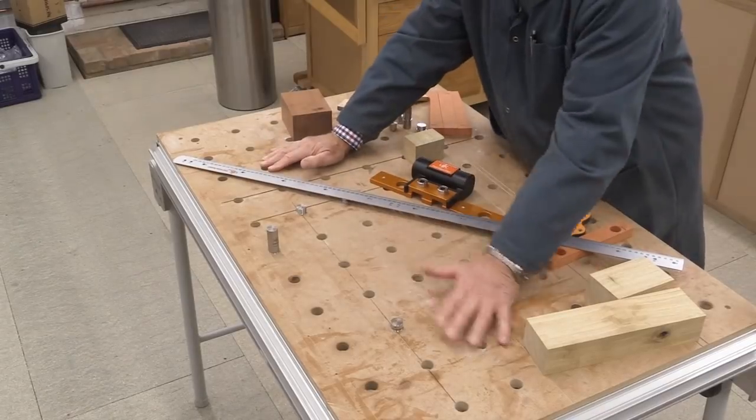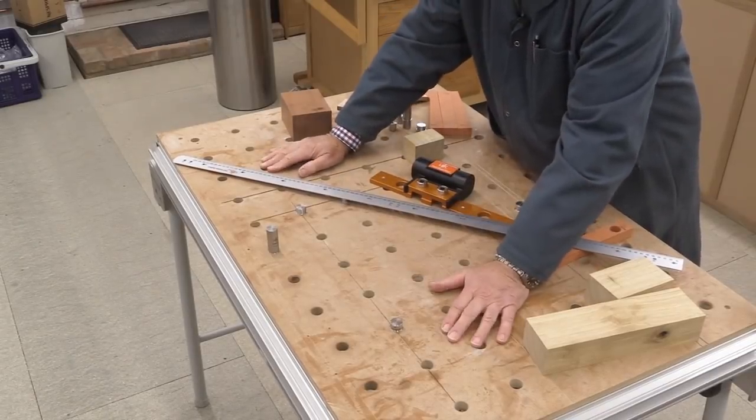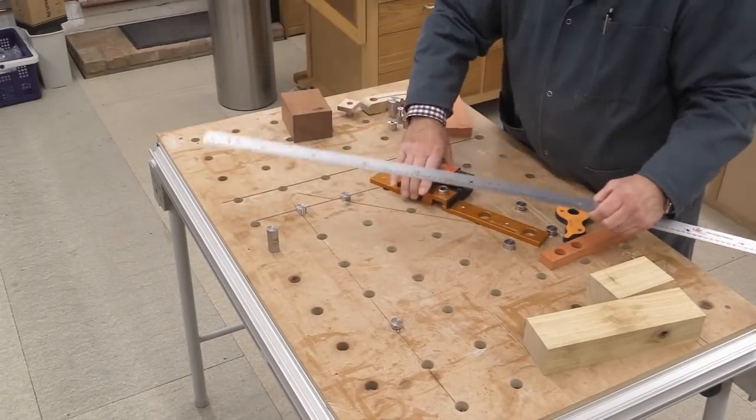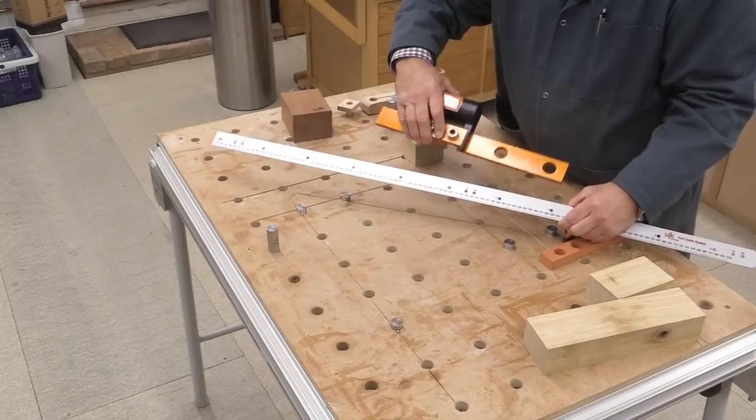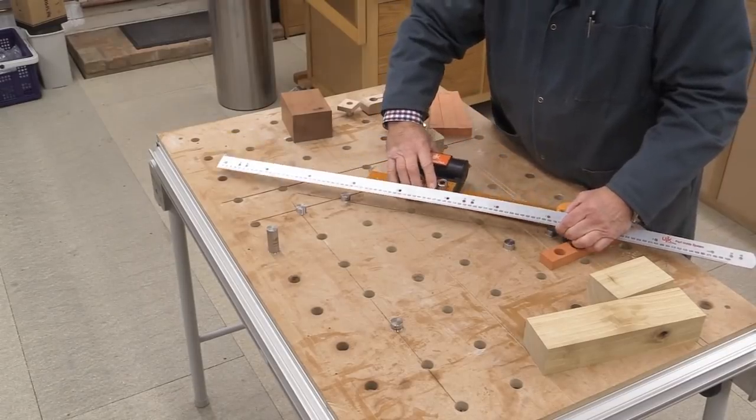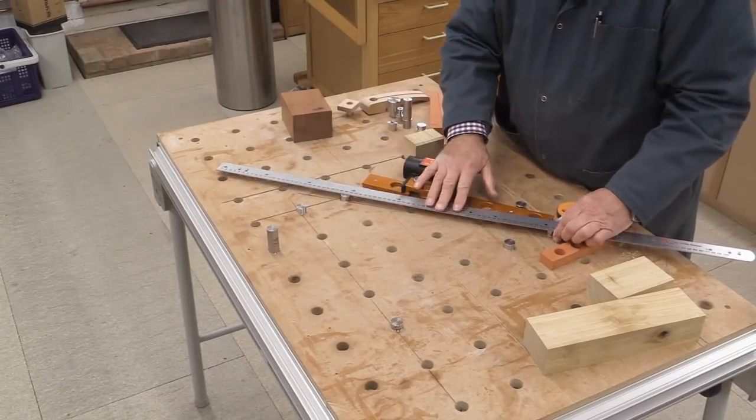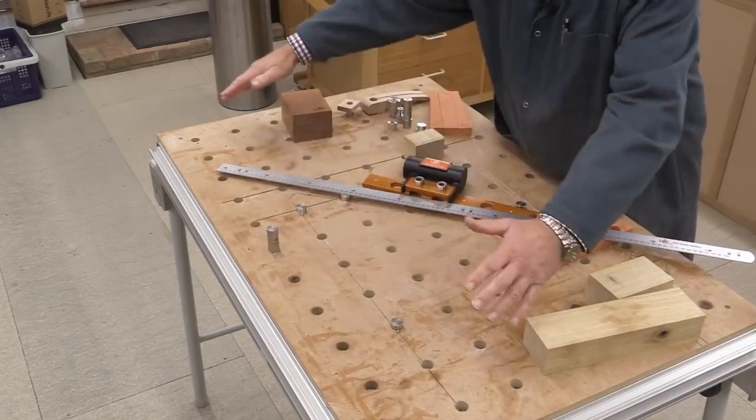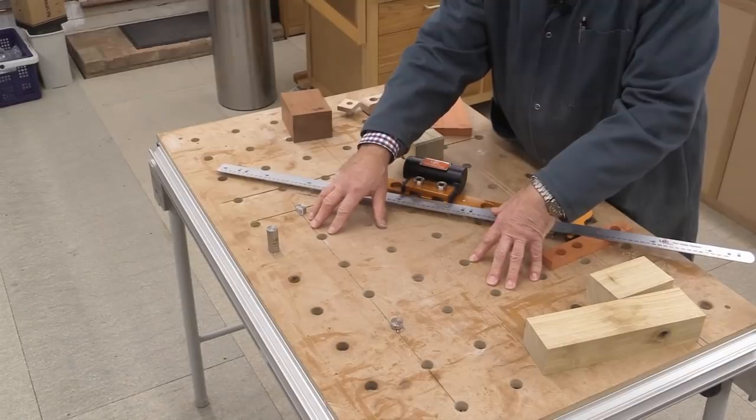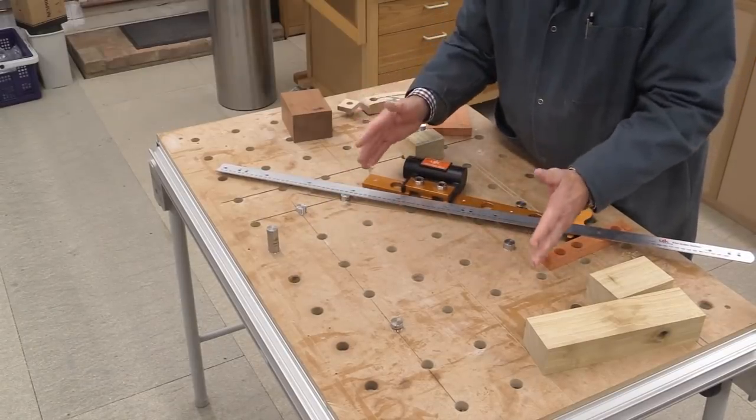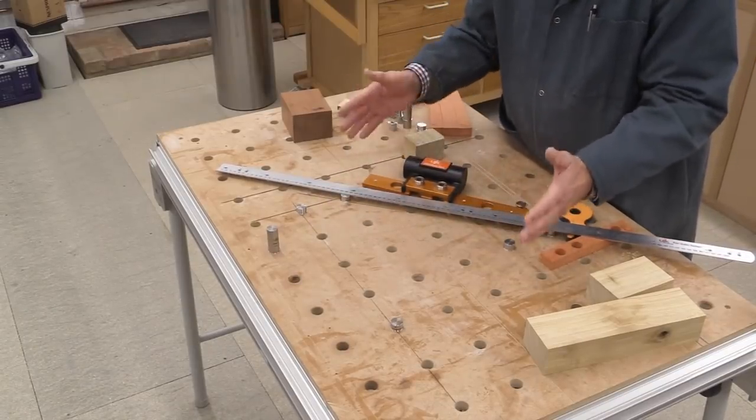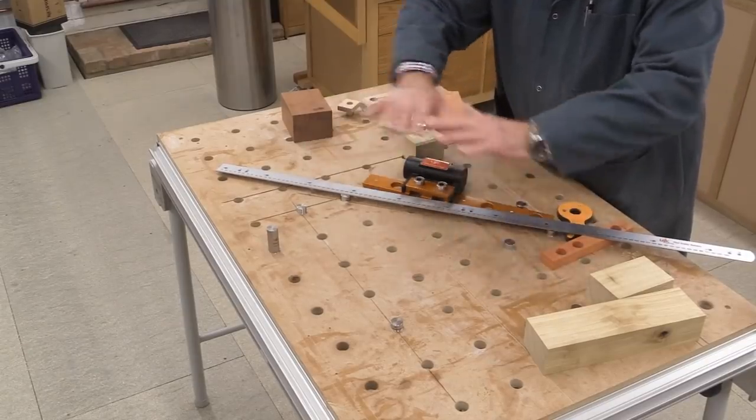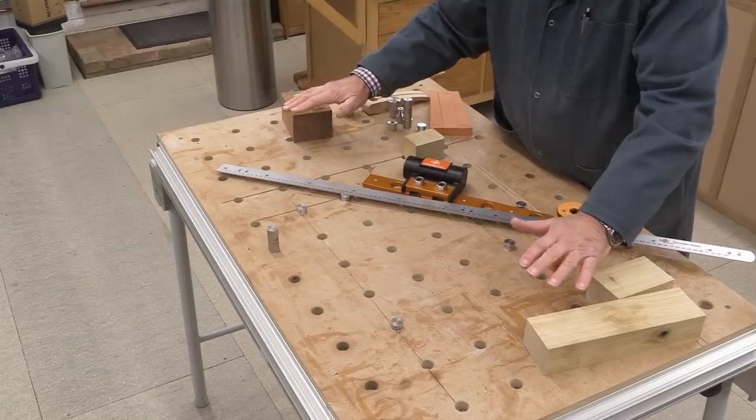Now I created this replacement MFT3 top using the Parf guide system. And I've made a number of videos about this, and so I'm not going to go into it in any detail. Suffice it to say that with the Parf guide system, you can lay out a perfect rectilinear arrangement of holes at 96mm centres, so that you can then do accurate jig work and accurate cutting with your track saw on either an MFT3 or any custom top that you might make.